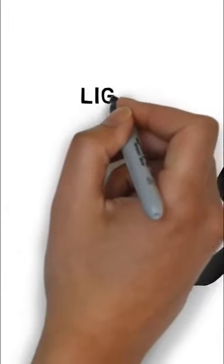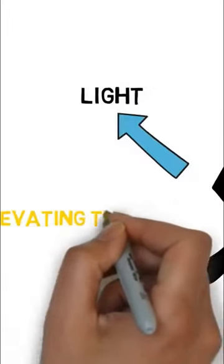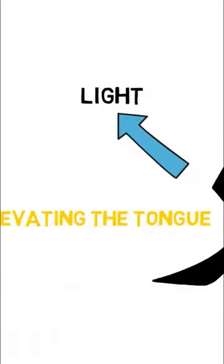But when the Ra is heavy, we give it the quality of heaviness by elevating the tongue. If the Ra has a Kasra, it will read light.